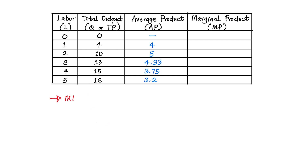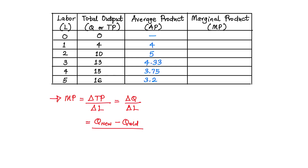The marginal output per labor, or the marginal product of labor, is simply the change in total output divided by the change in labor — which is the same as saying change in quantity divided by change in labor (ΔQ/ΔL). This means: new quantity minus old quantity, divided by new labor minus old labor.